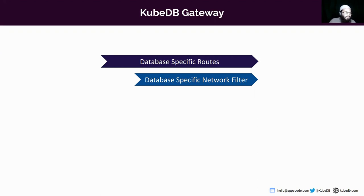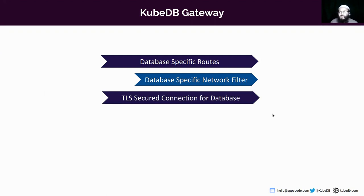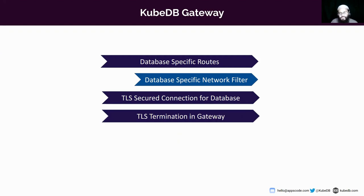All these filters are available in the Envoy proxy project but not in the Envoy Gateway project. Since Envoy Gateway uses Envoy proxy, there is a path to use them, but it wasn't configurable in Envoy Gateway. In KubeDB Gateway, we are offering those configurations. We integrated database-specific network filters, using most of the potential those filters offer without violating the Gateway API. We also added TLS configuration support and TLS termination in the gateway specifically for databases.